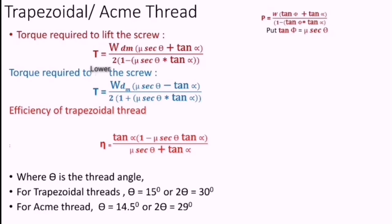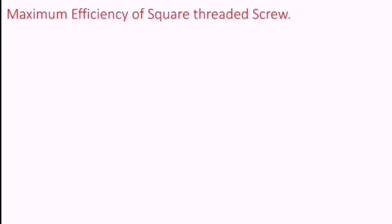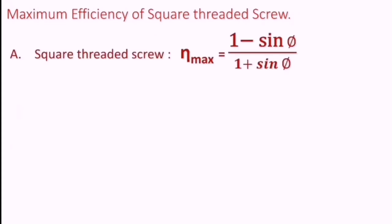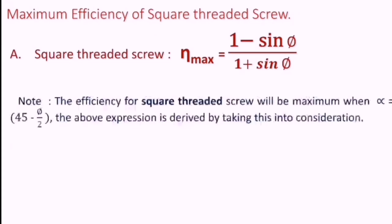Previously we have seen the expressions for efficiency of a square threaded screw. Now let us look at the maximum efficiency of a square threaded power screw. The maximum efficiency is given by the expression (1 minus sin φ) divided by (1 plus sin φ). The efficiency of the square threaded screw is maximum when α equals 45° minus φ/2, and this was taken care of while deriving the above expression. With this, we have completed the theoretical aspects of the power screw. From the next class, we will start with problems.